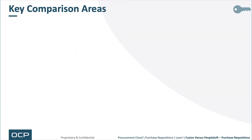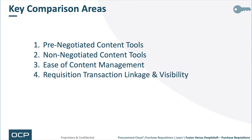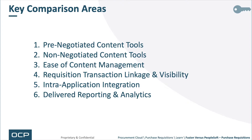There are six key comparison areas: pre-negotiated content tools, non-negotiated content tools, ease of management of content tools, requisition transaction linkage and visibility (meaning the downstream transactions linkage and visibility), intra-application integration — the integration amongst all of the different related applications — and lastly, delivered reporting and analytics.